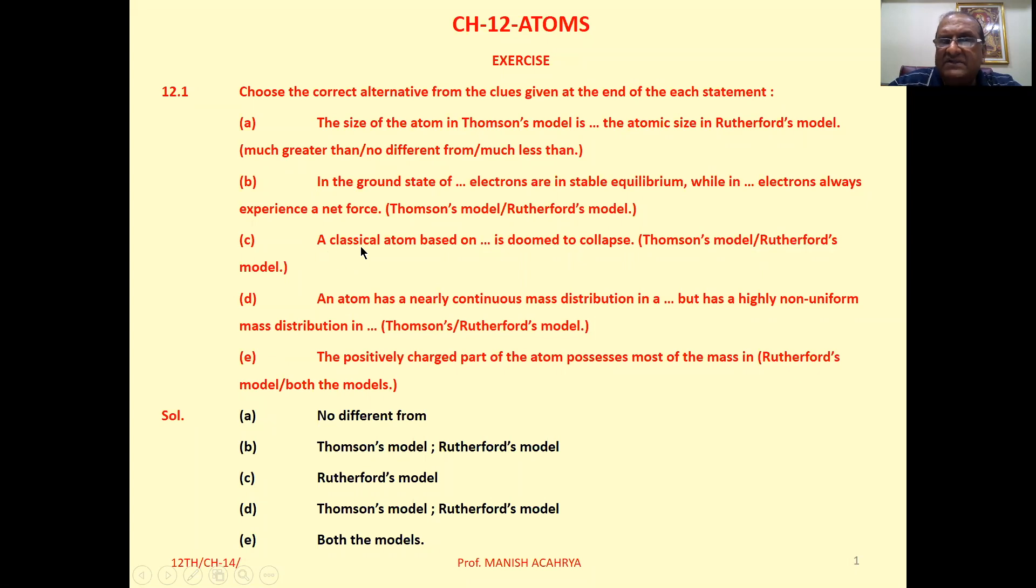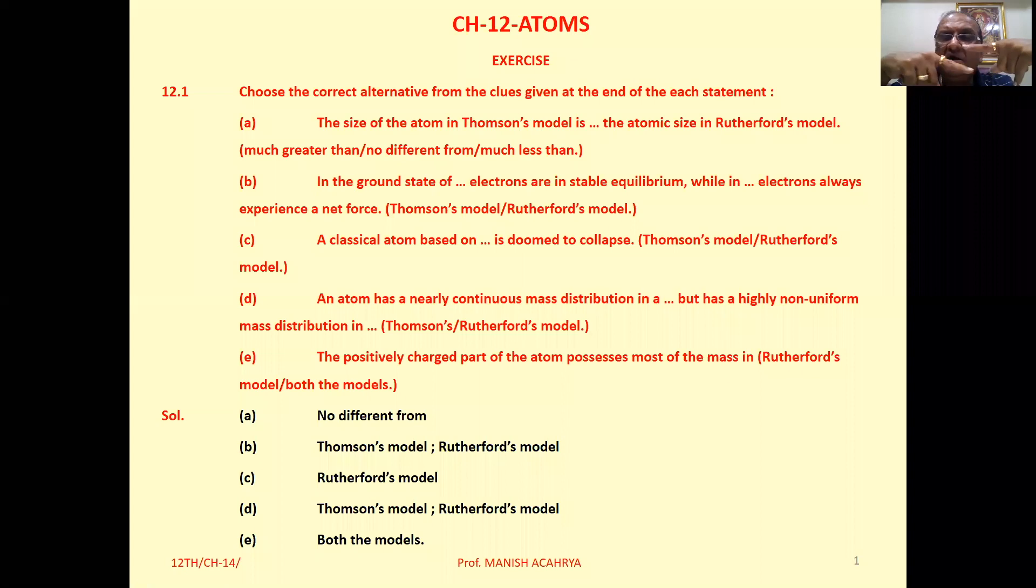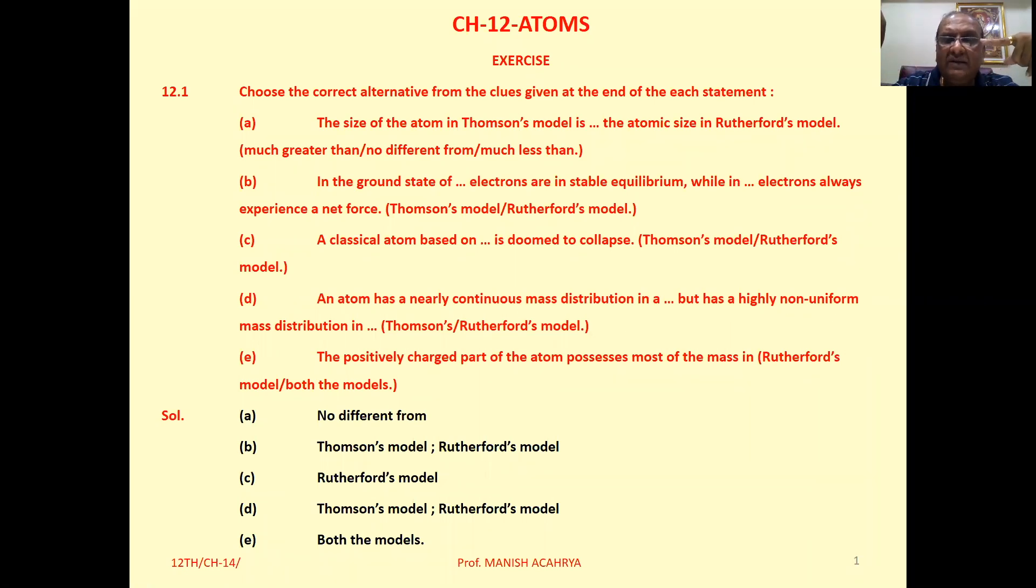A classical atom based on Rutherford's model is doomed to collapse. We already discussed in the theory: if electron is revolving around the nucleus, then continuously it will emit energy and move on a spiral path, and finally it will be at rest in the nucleus.